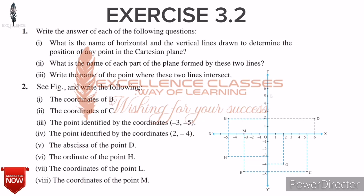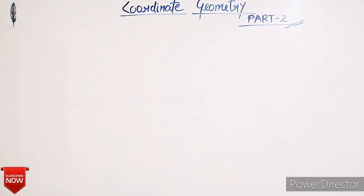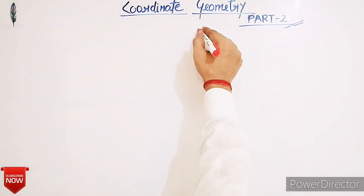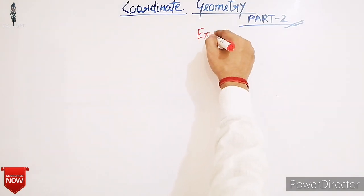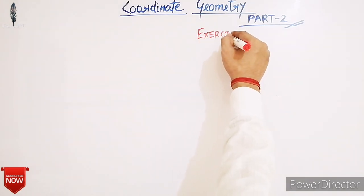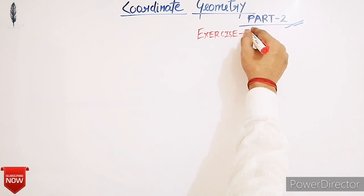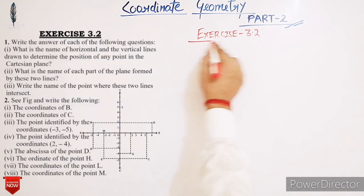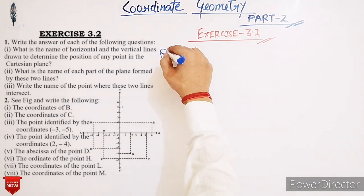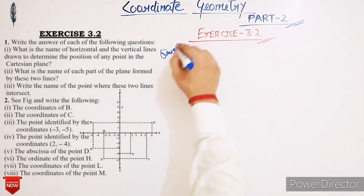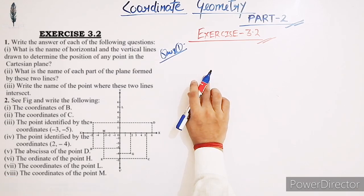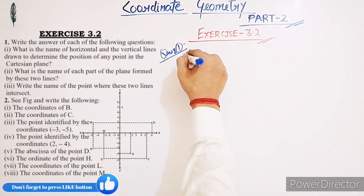Hello students, welcome to Excellence Classes way of learning. Today we are going to discuss Exercise 3.2. Let's start. Exercise 3.2, question number one: write the answer of each of the following questions. Here, first is what is the name of horizontal and the vertical lines drawn to determine the position of any point in the Cartesian plane.